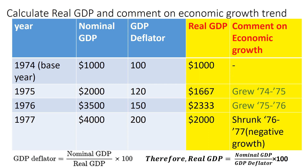Now let's move on to the next year. For 1975, real GDP uses the same formula: nominal GDP 2000 divided by GDP deflator 120, times 100 — that gives us 1667. Similarly, for 1976, real GDP is 3500 divided by 150, times 100 — that gives us 2333 dollars.